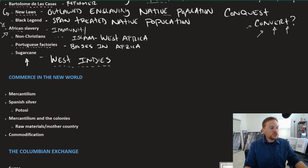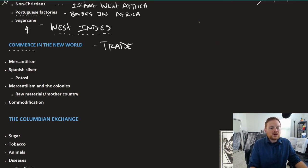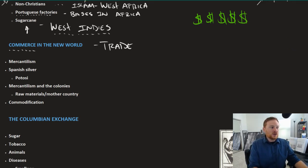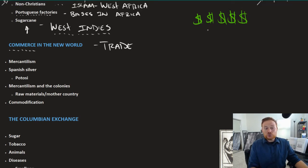Moving along to the world of commerce — commerce refers to trade. Whether you're Spain, England, France, the Dutch, or Portugal, they all have an incentive to make money, and a lot of the trade goods that come from the New World are highly sought after. The Spanish made their money off of silver, discovering one of the largest silver mines in the world at Potosi, where something like 80% of all the world's silver came from.